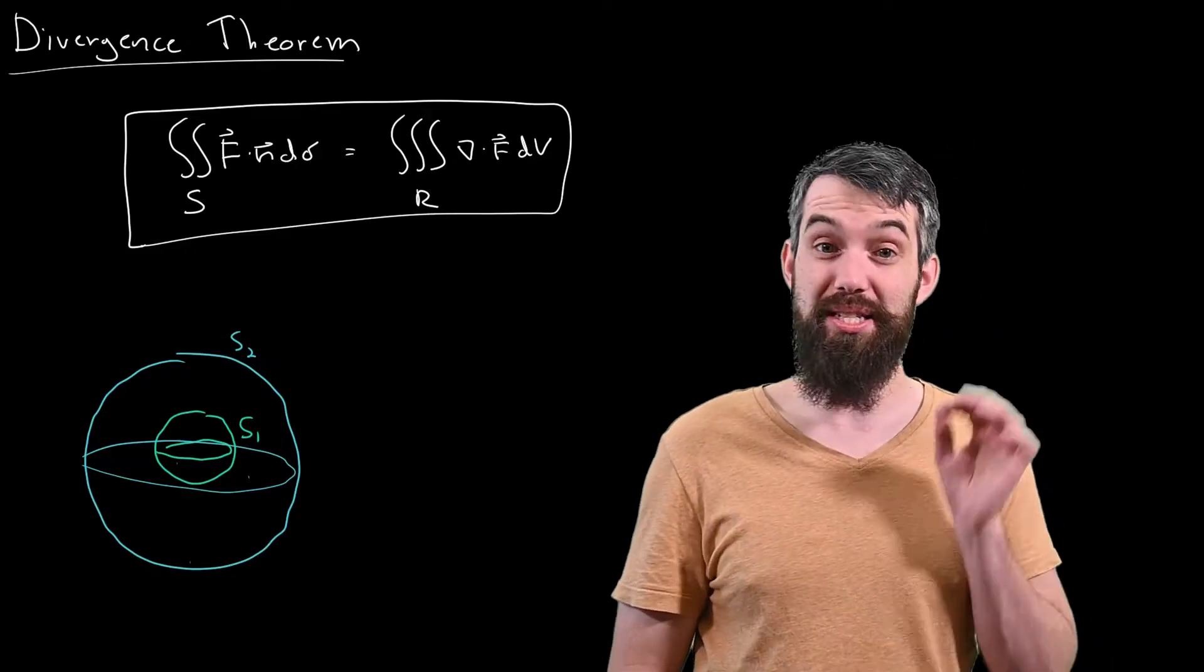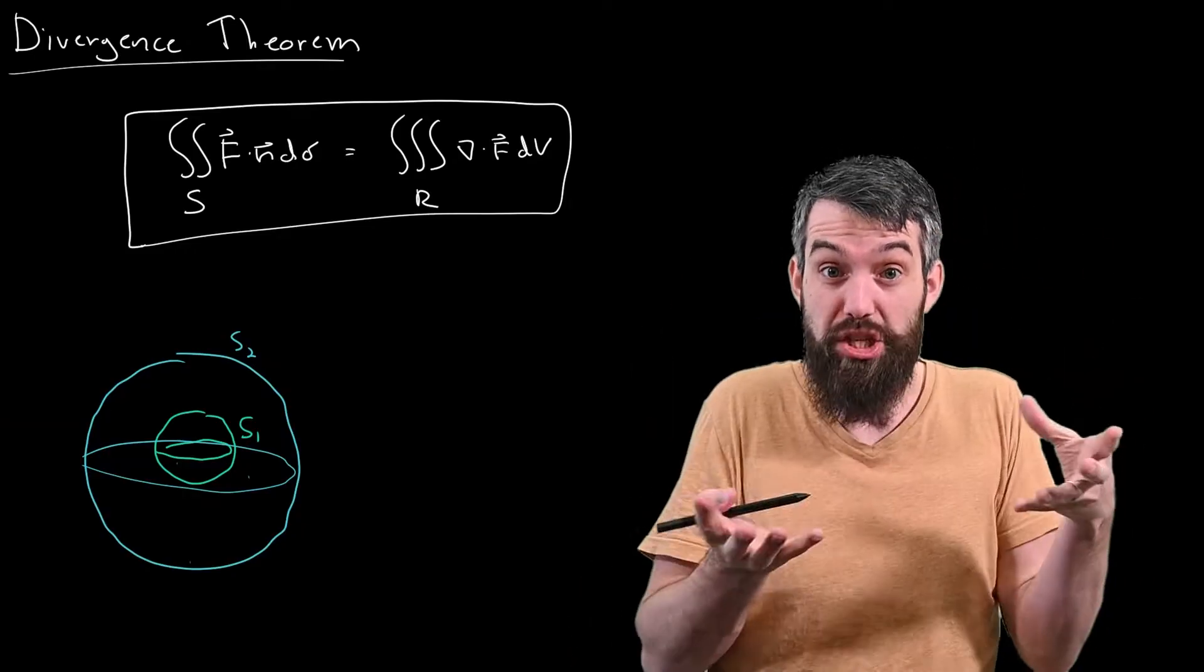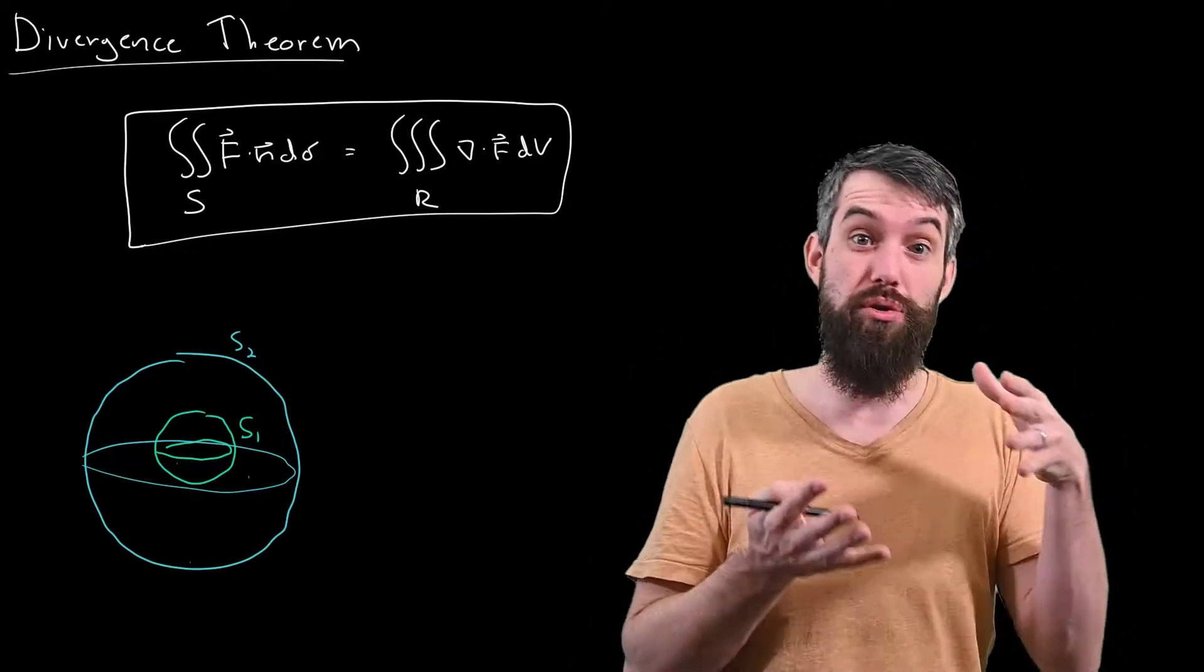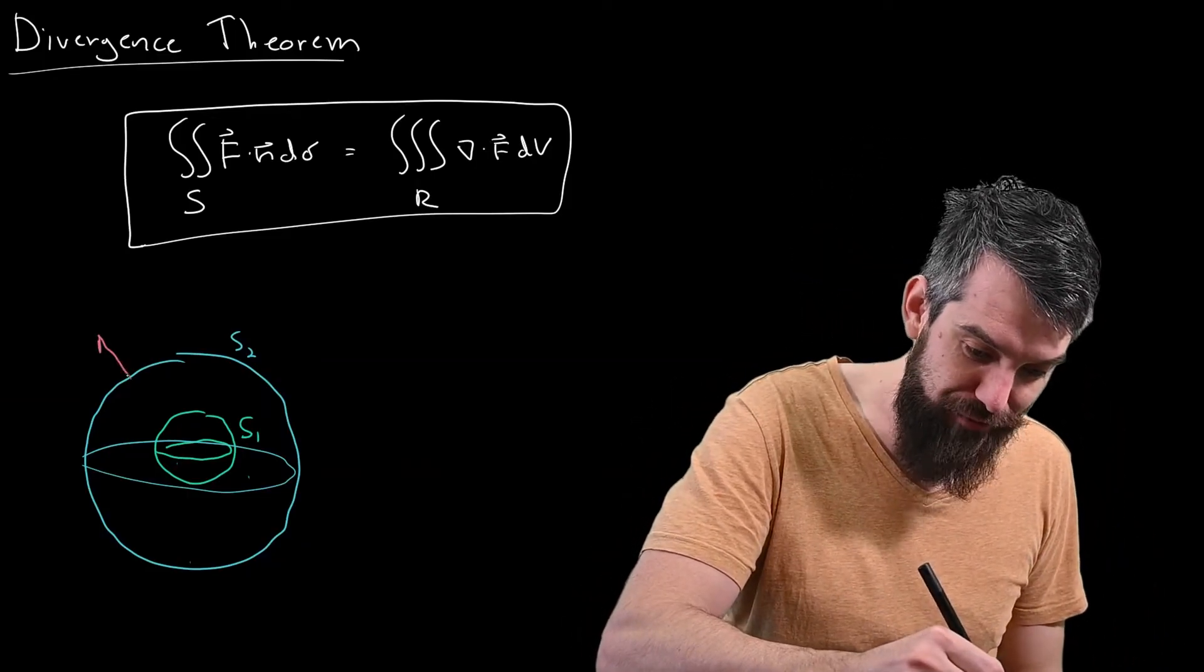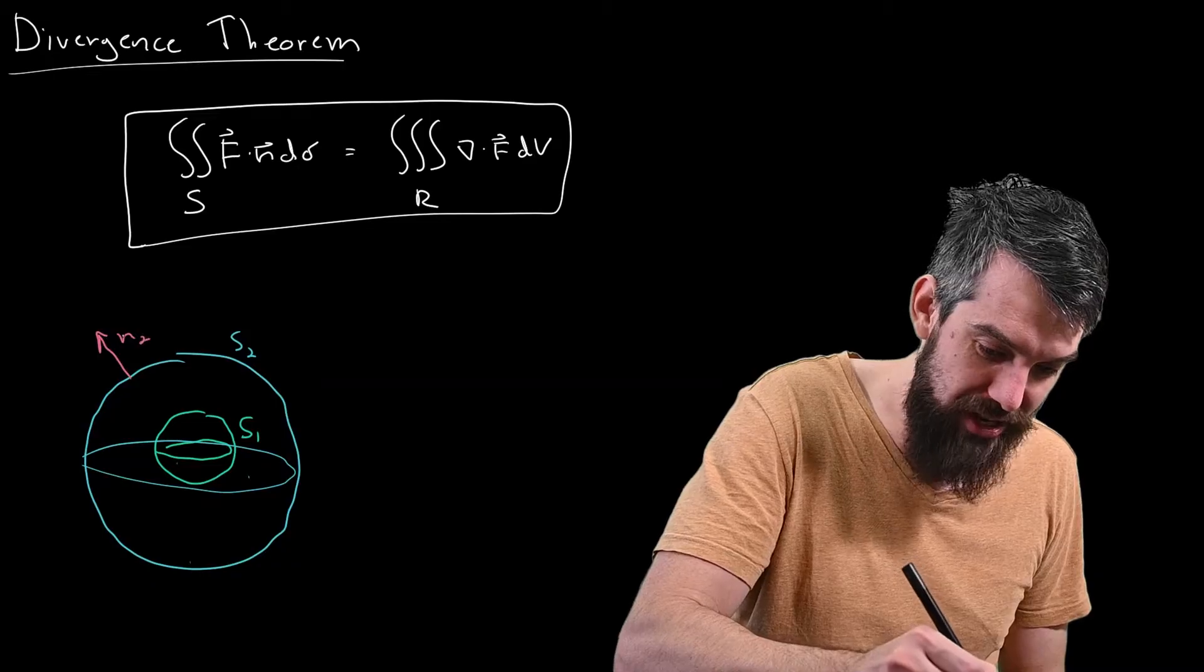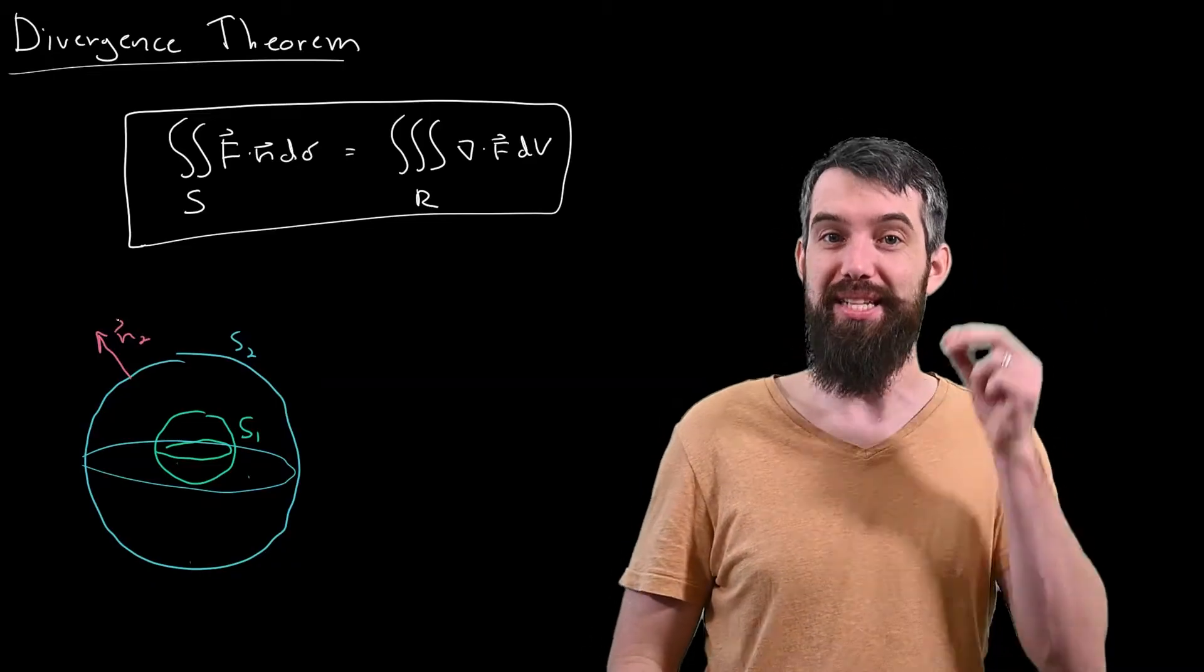And then I want to consider, from the perspective of this region that's in between these two spheres, the outward normals. Well, on the outer sphere, it's going to point out. I'll call this N2 for the outward normal on the second surface.